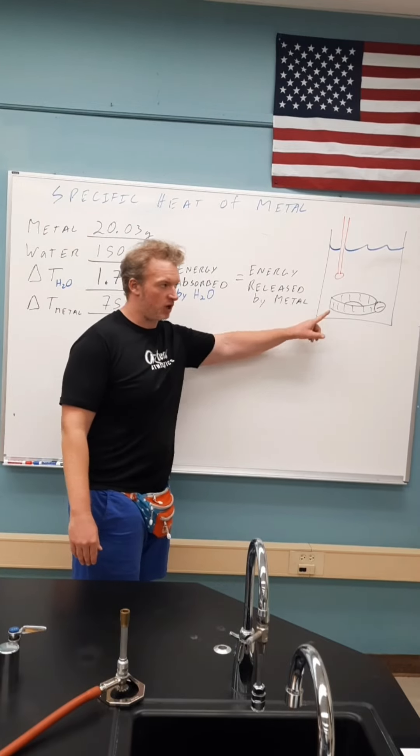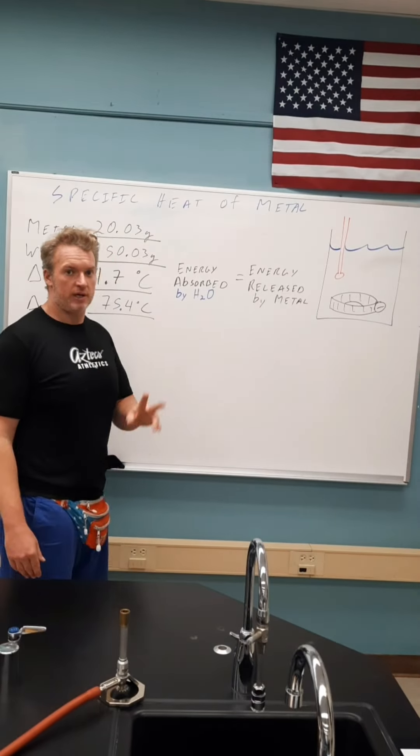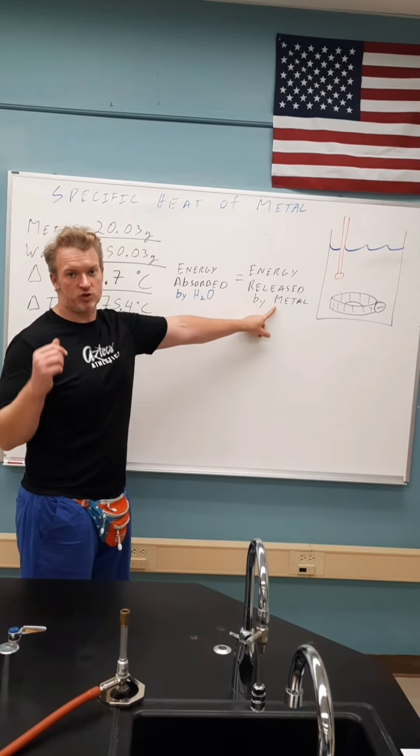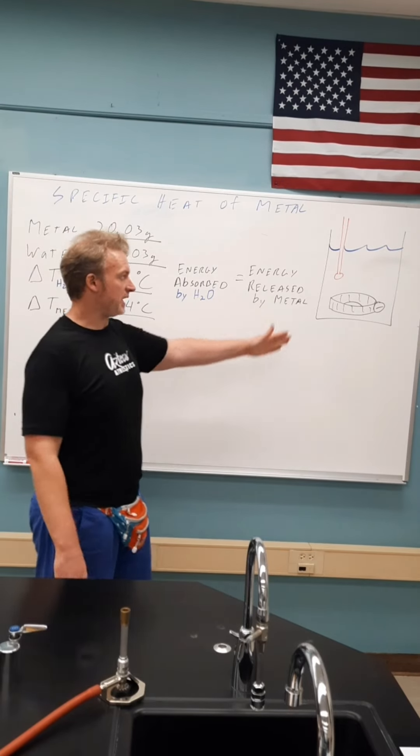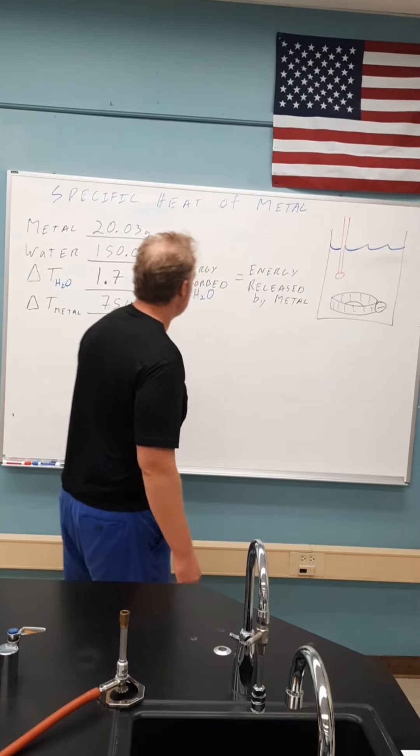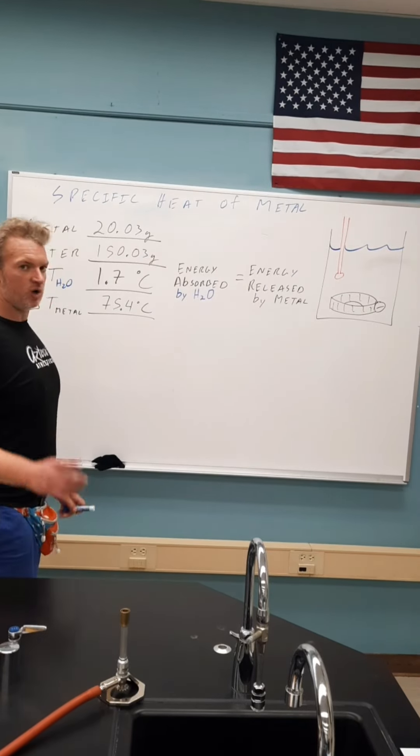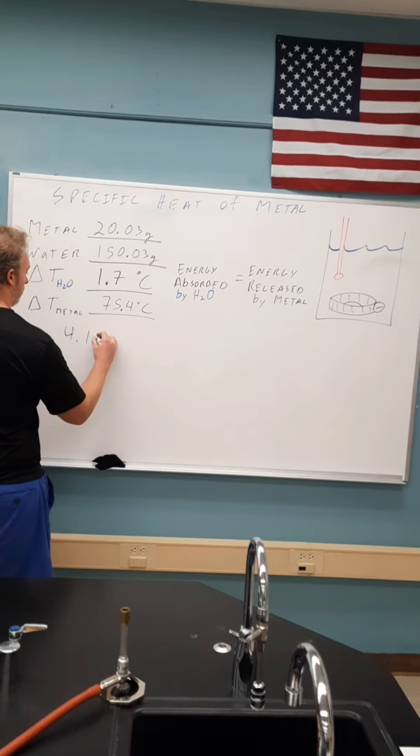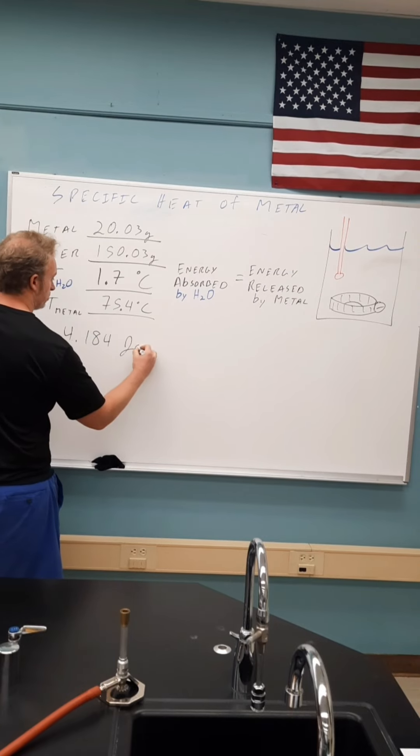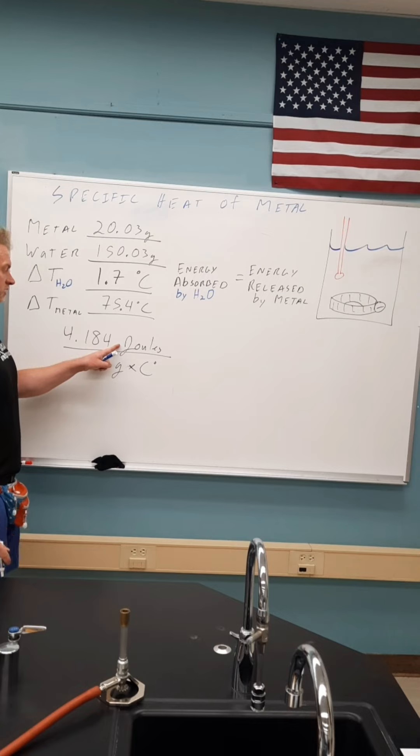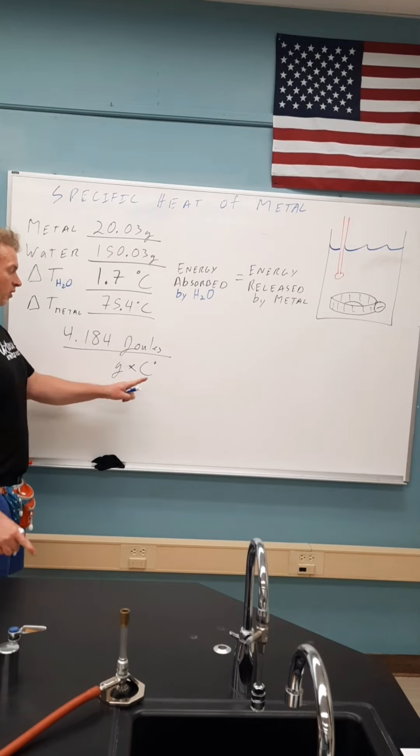Our assumption is that the energy absorbed by the water must be equal to the energy released by the metal, because any temperature change was due to the addition of that hot piece of metal. Because we use liquid water, we know that the energy absorbed by water is absorbed at this rate: 4.184 joules per gram degrees Celsius. This is the energy per gram per one degree Celsius.